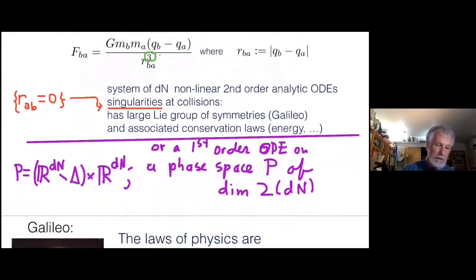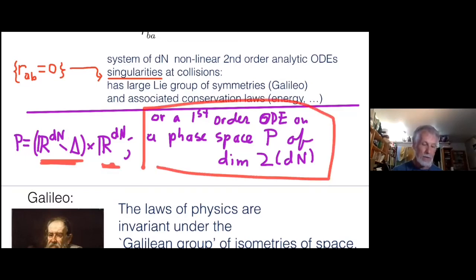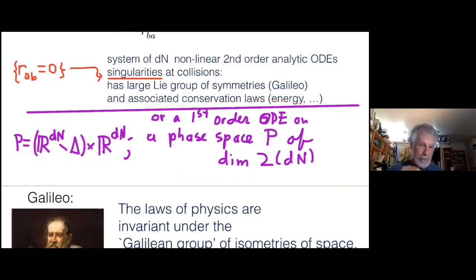The force is like before, it's one over R squared force where R is the distance between body B and A. And the proportionality constant is the product of the masses involved and the gravitational constant, which you need to make the units match. Generalities about the equations: they're a system of D times N non-linear second order ODEs. They're analytic. They have singularities at the collisions. The phase space is RDN minus the collisions.